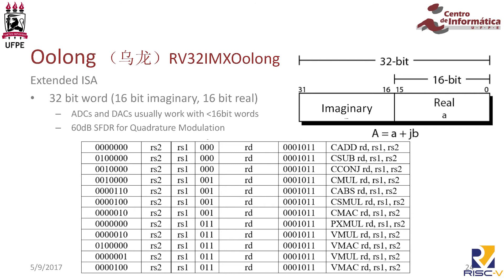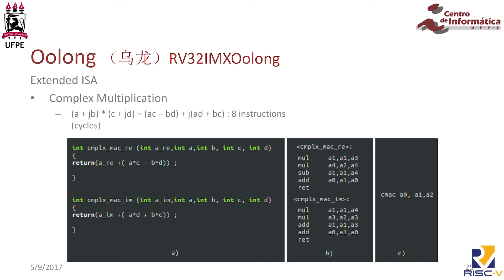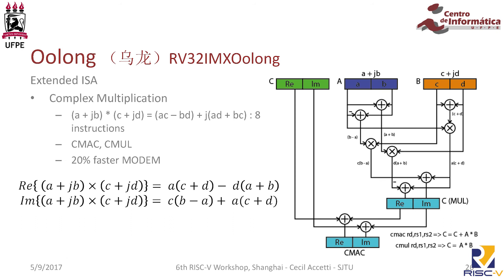Why do we have complex number instructions? Because it takes 8 instructions to do 1 complex multiply, so reducing code size and speed made it viable. With this custom multiply instruction we got 20% faster execution — considering all the other processing loading on the FPGA — and that 20% is the difference between being able to run the workload on the FPGA or not, so 20% makes a lot of difference.